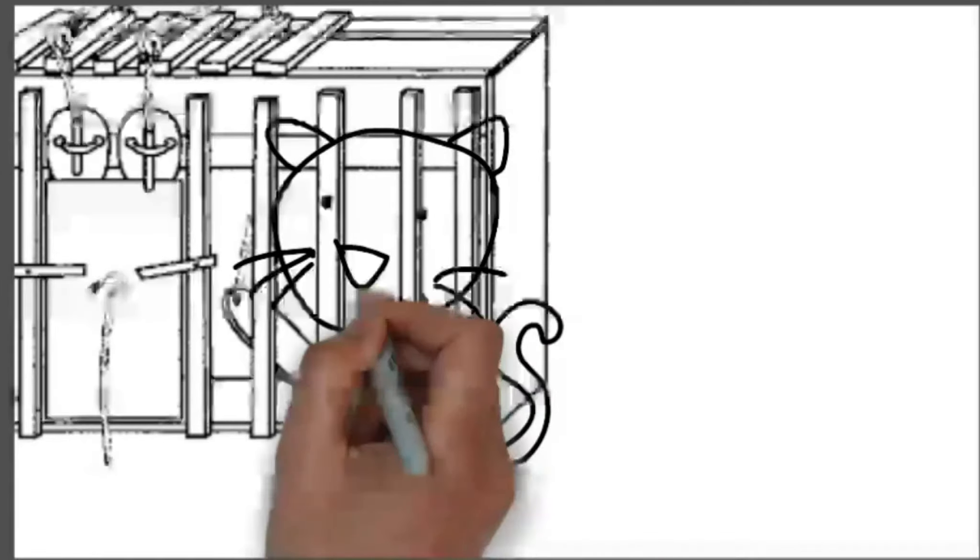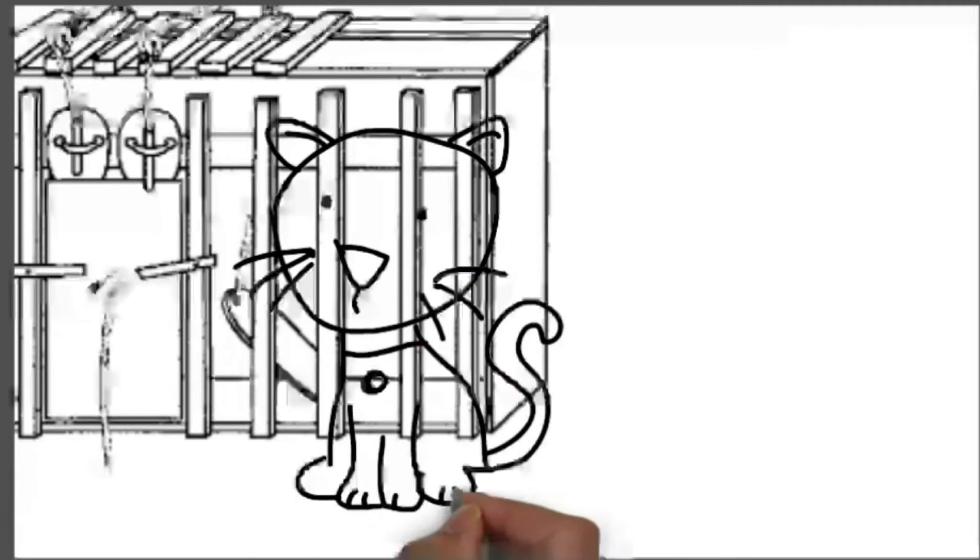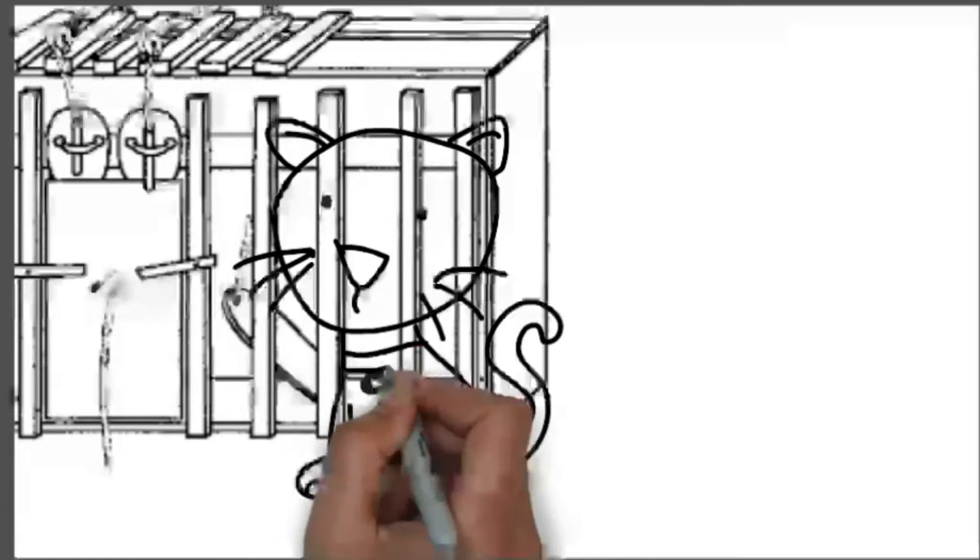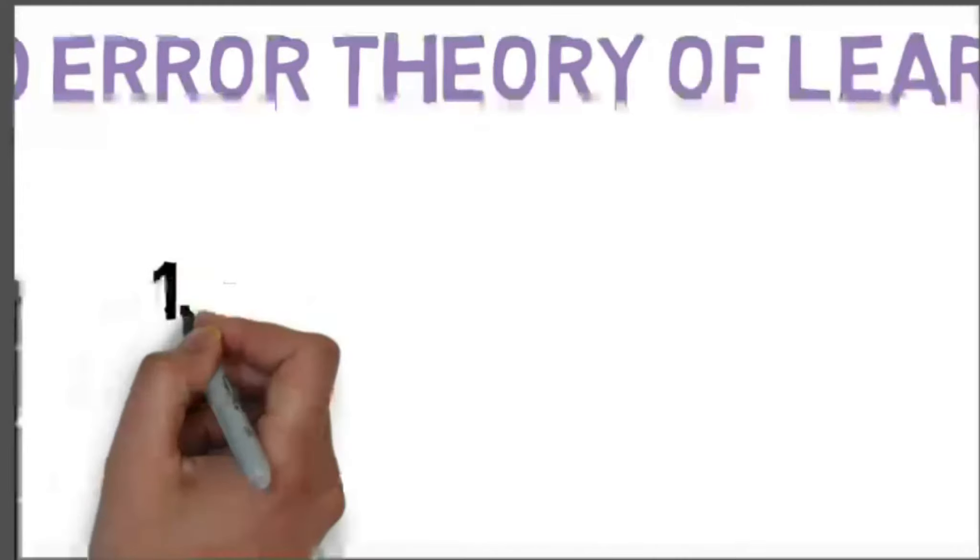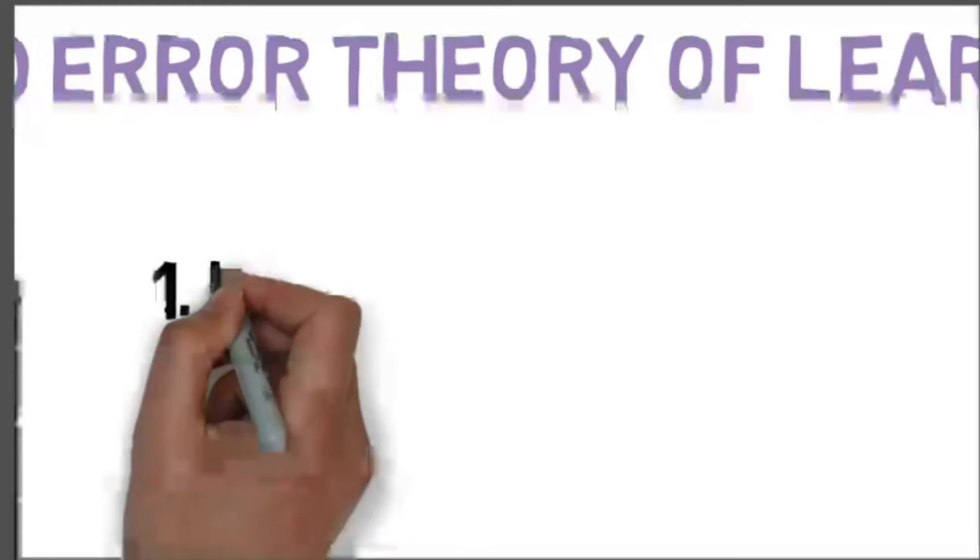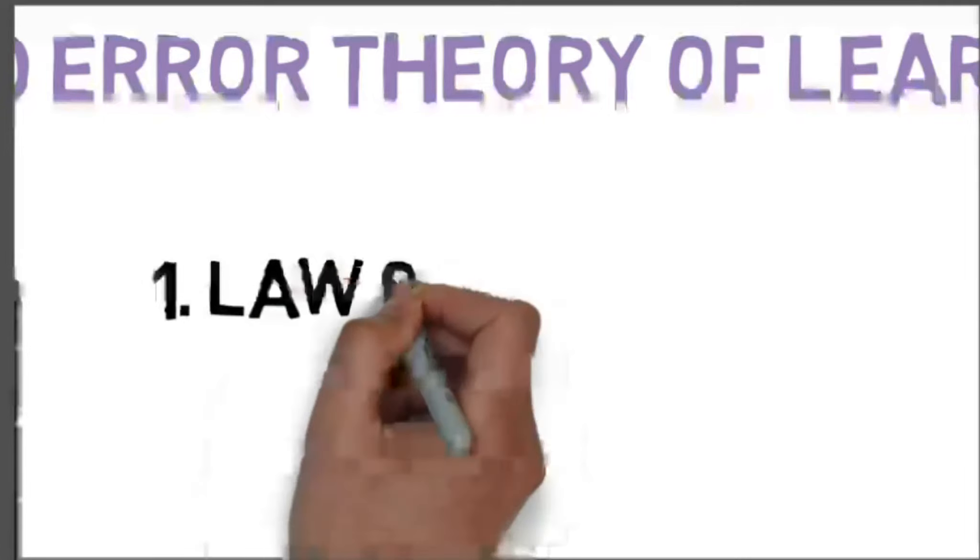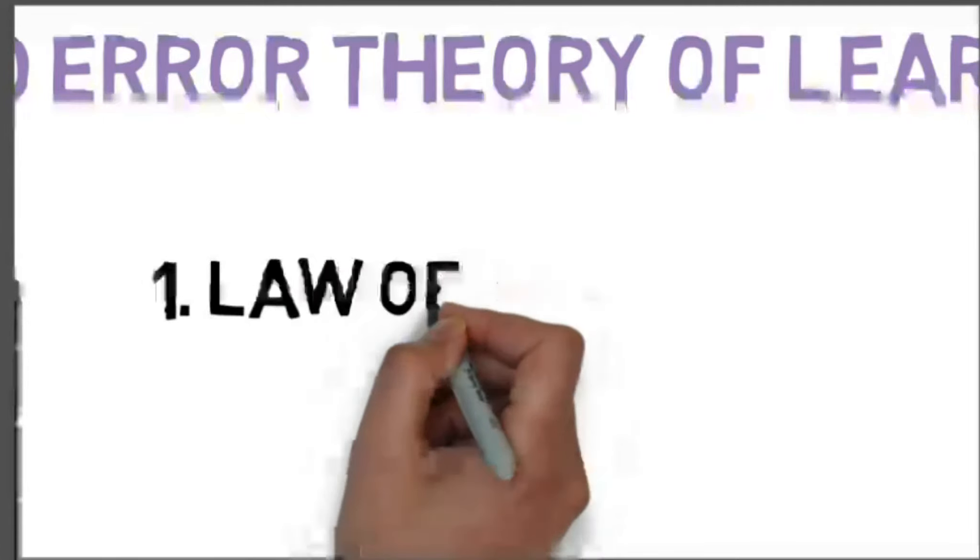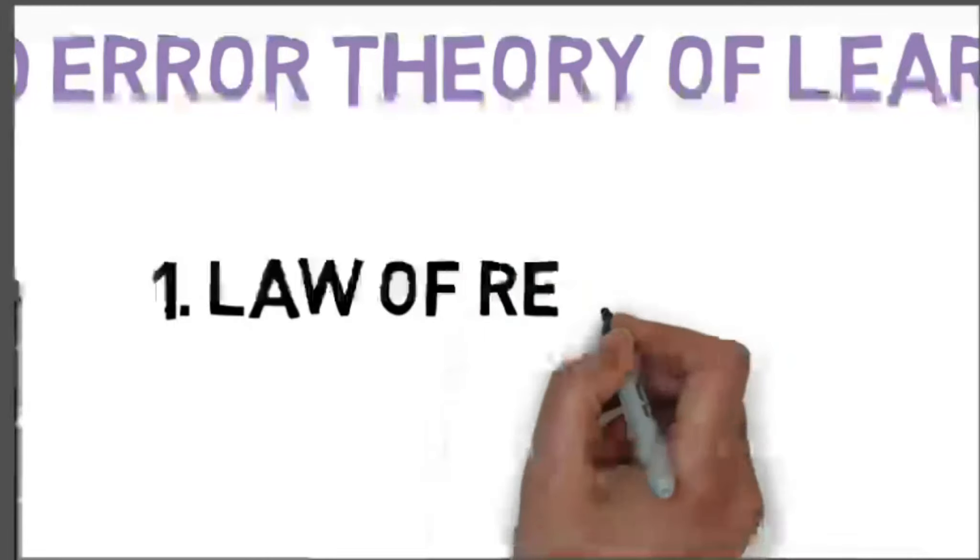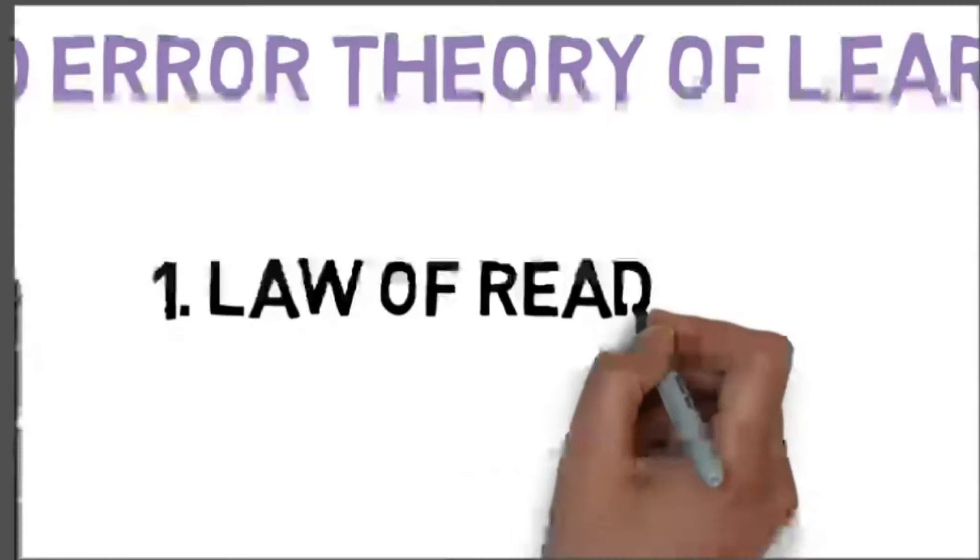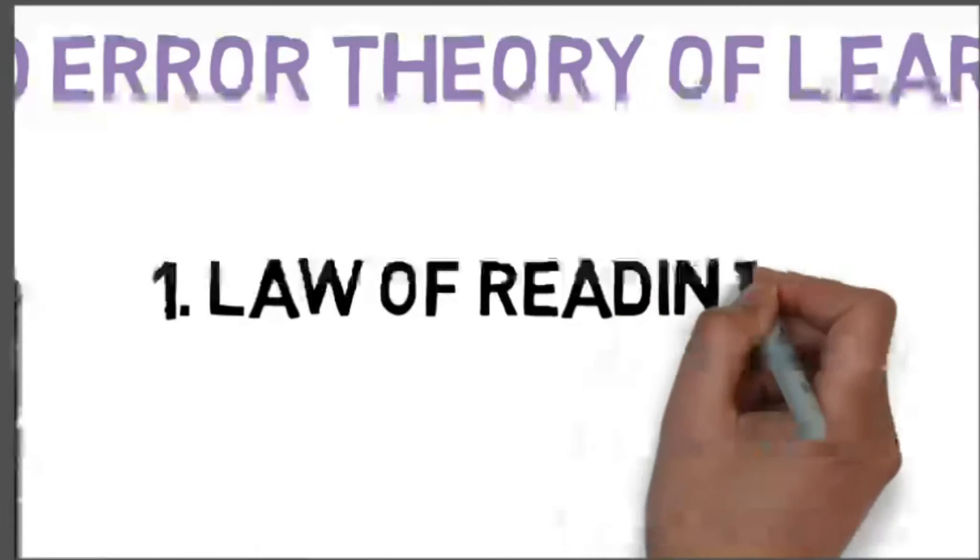Laws of learning based on trial and error learning theory: Thorndike gave certain laws of learning. There are three fundamental laws of learning. Number one, law of readiness. This law refers to the fact that learning takes place only when the learner is prepared to learn. No amount of efforts can make the child learn if the child is not ready to learn.